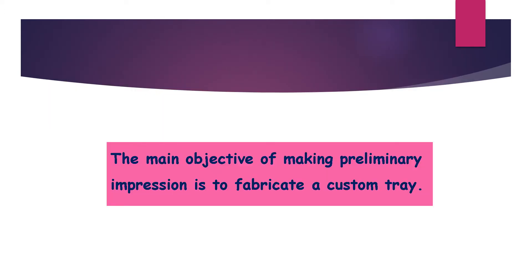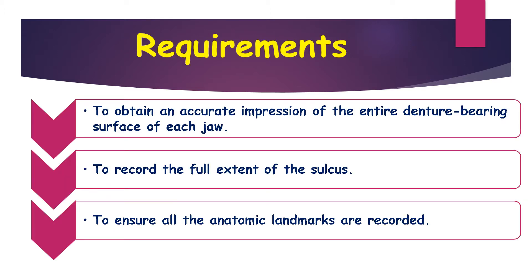The main objective of making a preliminary impression is to fabricate a custom tray. The requirements of preliminary impressions include: to obtain an accurate impression of the entire denture-bearing surface of each jaw, to record the full extent of the sulcus, and to ensure all anatomical landmarks are recorded.